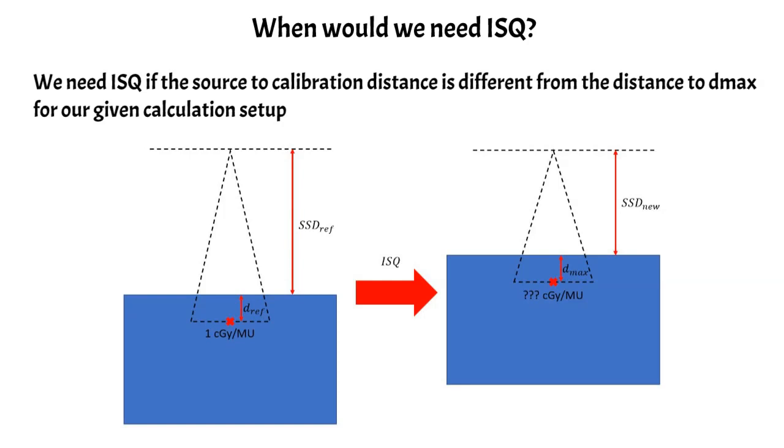So on the left, you can see our calibration condition. So we calibrate our accelerator at a given SSD, at a given depth, and we know the accelerator is giving one centigrade per monitor unit in this condition. But if we convert this condition to our treatment geometry that we have, we might not be giving one centigrade per mu at the depth of D max here. And remember, the PDD is normalized to D max.